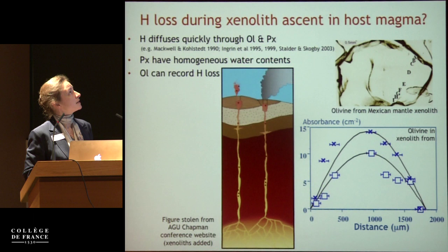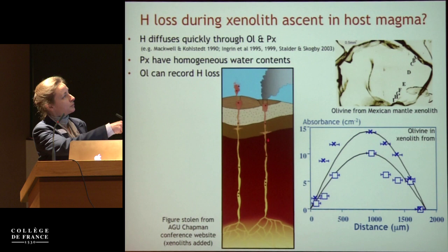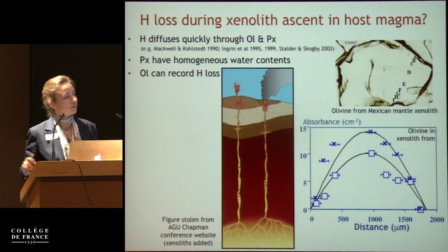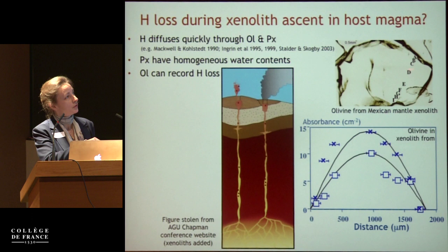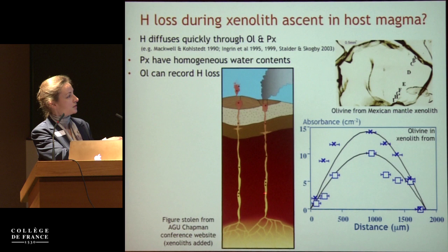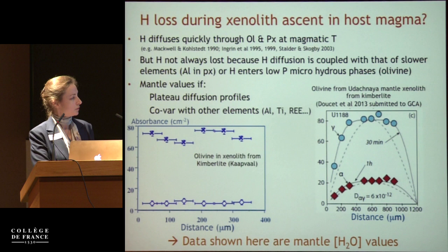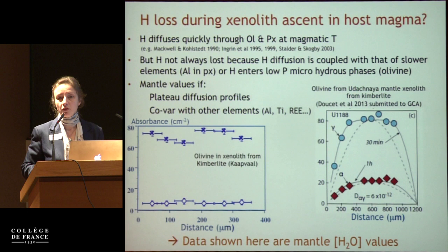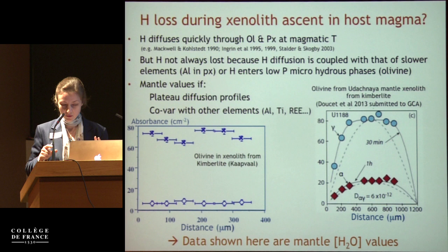One problem with this type of data is that by the time a piece of mantle is picked up by the lava and brought to the surface, hydrogen can diffuse out of the minerals. If we measure water in the middle of an olivine and some has been lost, the measured water content will not represent what it was in the mantle. So I have filtered all the data to include only those I believe represent true mantle values, and excluded samples where I think water has been lost.